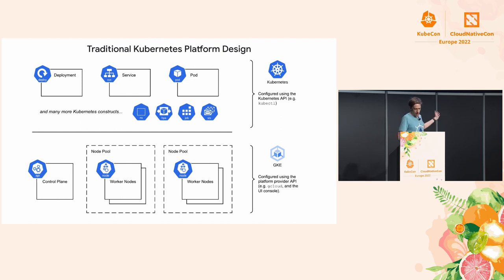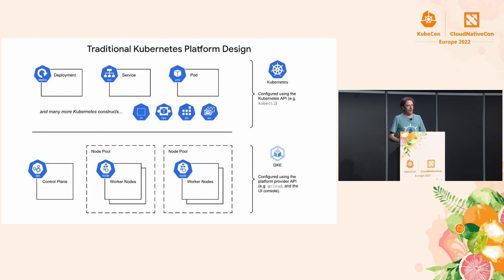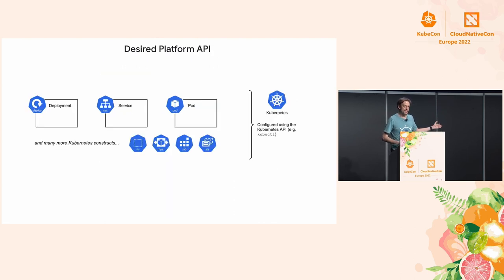Then you have the platform API — whether it's GKE or one of the others — and with that API, you have to configure the cluster in order to serve those Kubernetes objects. You might have to create nodes of a certain size or with certain capabilities. I believe that an ideal fully managed Kubernetes platform would just be the Kubernetes API, where you interact with everything using kubectl and YAML files.